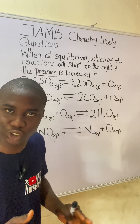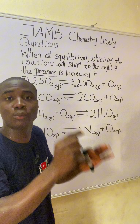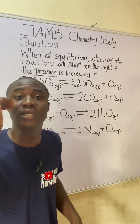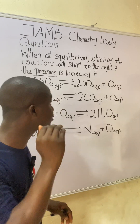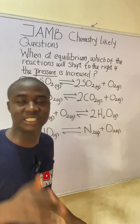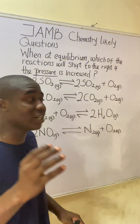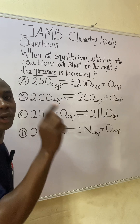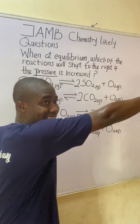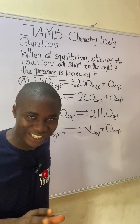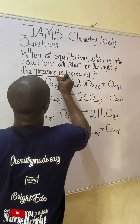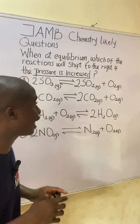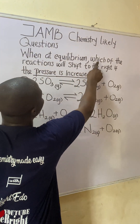Please watch closely as I solve this particular practice question. At the end of solving this question, I'm going to give you your own practice question to solve — provide the answer in the comment section. It's actually very easy if you watch closely. The question says: when at equilibrium, which of the reactions will shift to the right if pressure is increased? So the key word I'm looking out for is: pressure was increased.